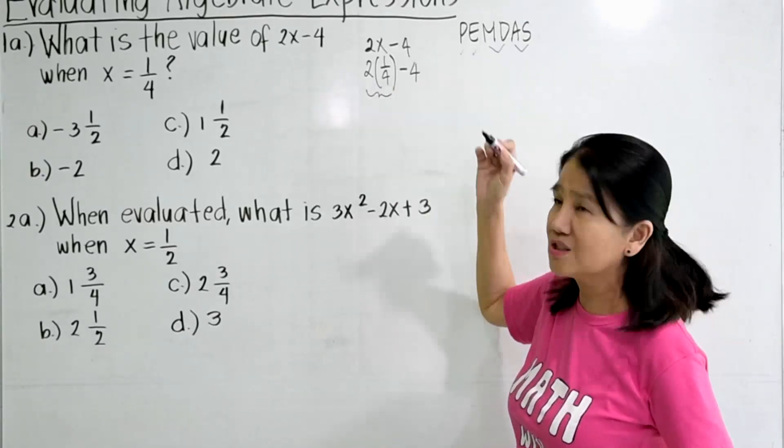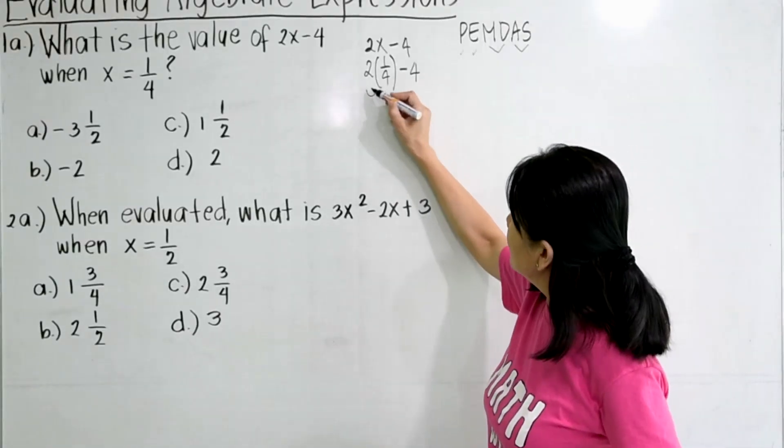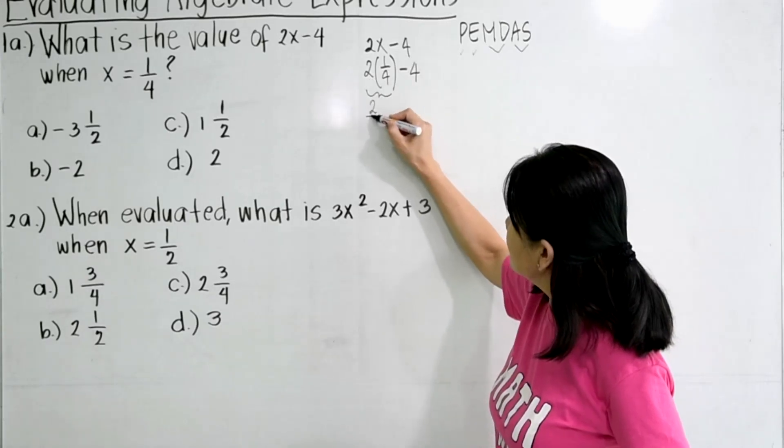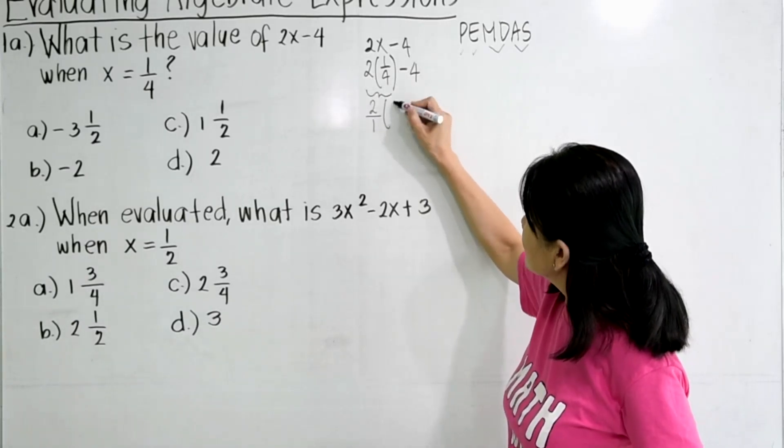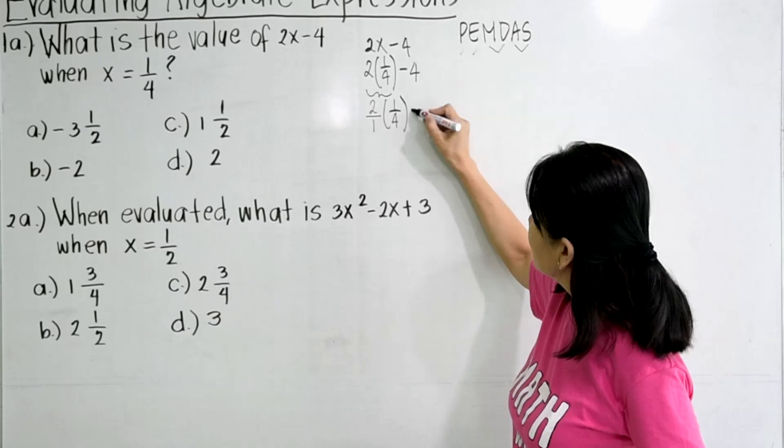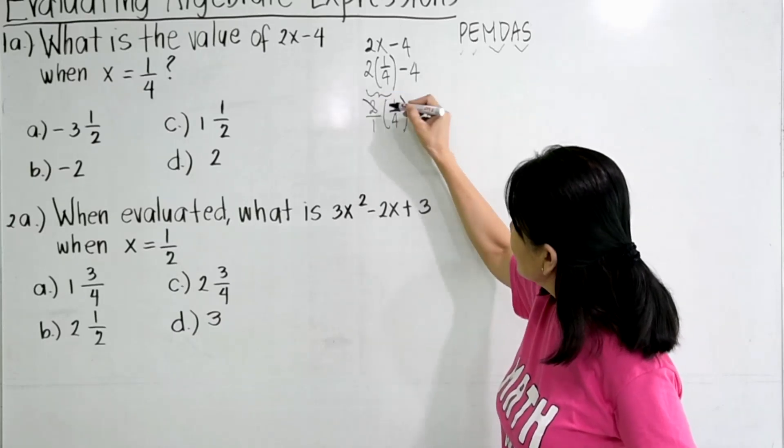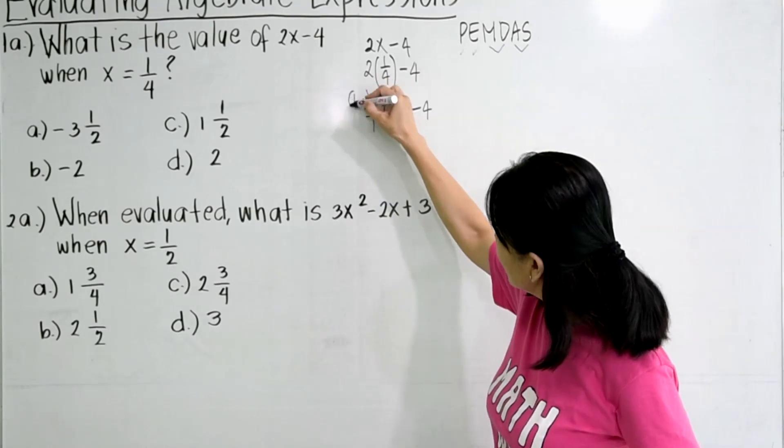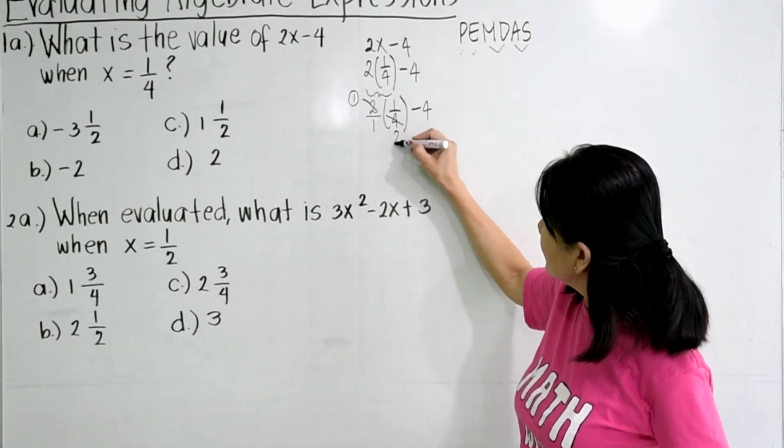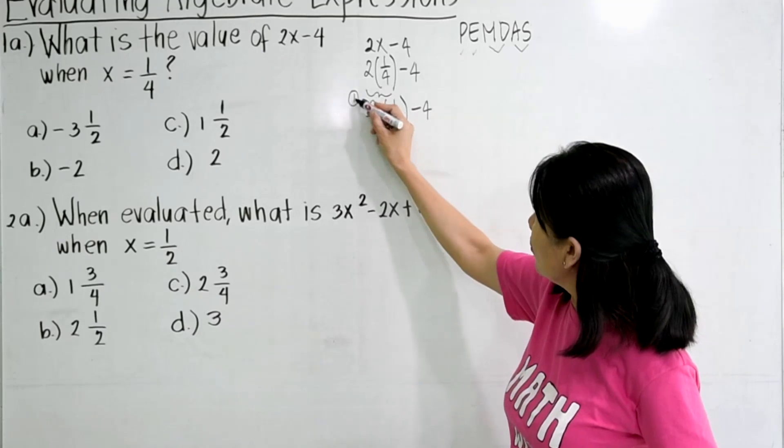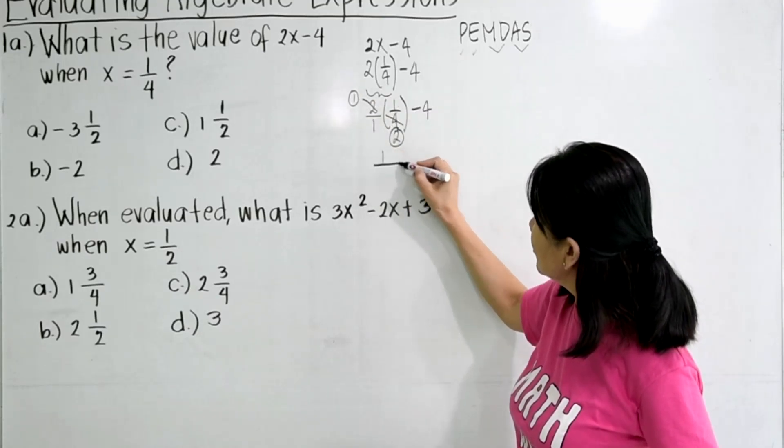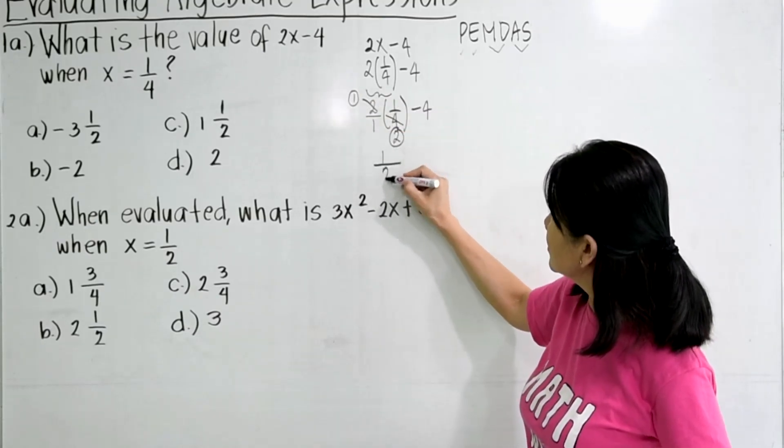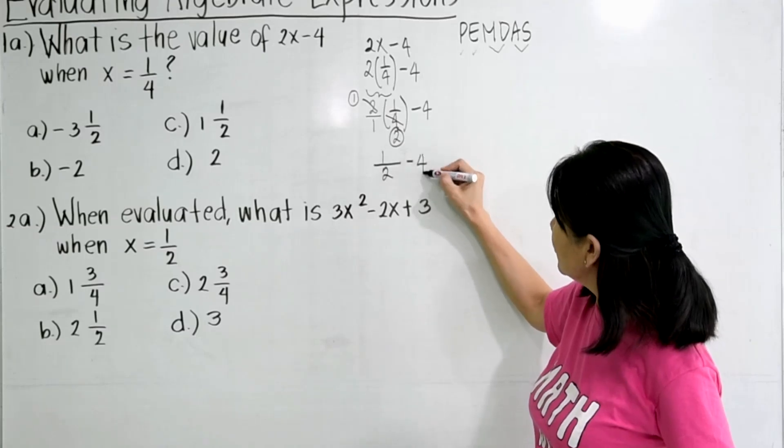So in this case, we have to multiply this 2 first. We know too well that 2 is 2 over 1 times 1 over 4 minus 4. So this will cancel with this. 2 divided by 2 will give you a 1. 4 divided by 2 will give you a 2.